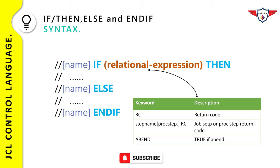To begin conditional execution, you code the IF statement followed by the condition you want to test. After the condition, you code the THEN clause followed by whatever JCL statements you want to execute if the condition is true. If required, you can code an ELSE statement followed by the JCL statements to execute if the condition is false. Finally, you end the conditional structure with END-IF. The IF THEN ELSE statement works the same way as in COBOL, Java, C++, or any other high-level programming language. To specify a relational expression, you use the keyword RC followed by an operator and the value to check.